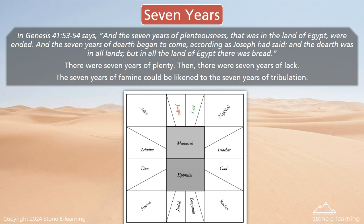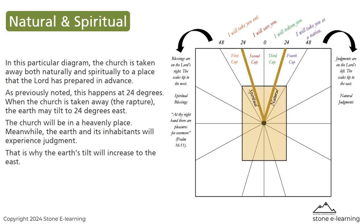In Genesis 41:53–54 it says: 'And the seven years of plenteousness that was in the land of Egypt were ended. And the seven years of dearth began to come, according as Joseph had said. And the dearth was in all lands, but in all the land of Egypt there was bread.' The seven years of famine could be likened to the seven years of tribulation. In this particular diagram, the church is taken away both naturally and spiritually to a place that the Lord has prepared in advance. This happens at 24 degrees. When the church is taken away in the rapture, the earth may tilt to 24 degrees east. The church will be in a heavenly place, while the earth and its inhabitants will experience judgment. That is why the earth's tilt will increase to the east.